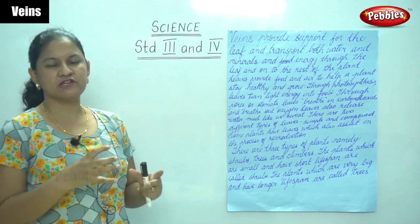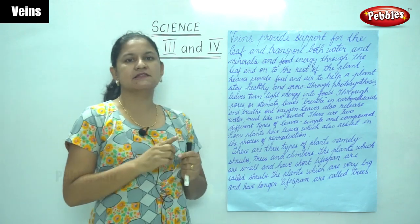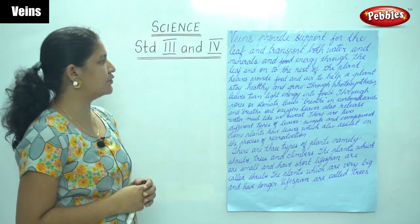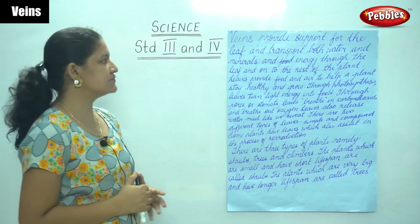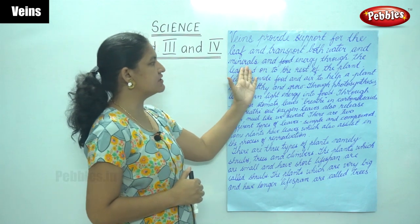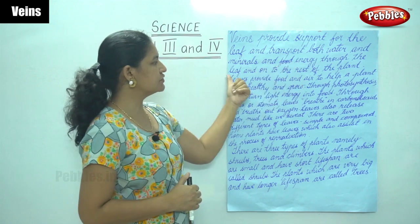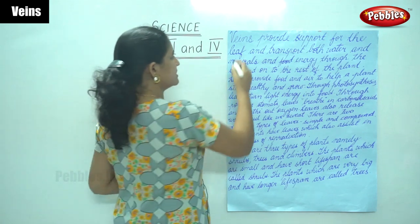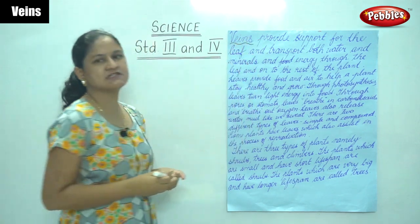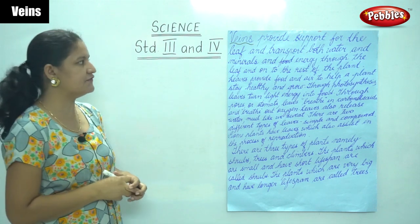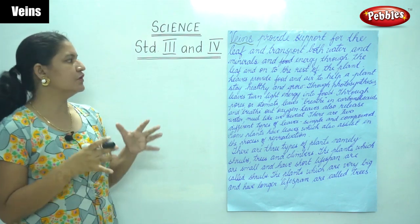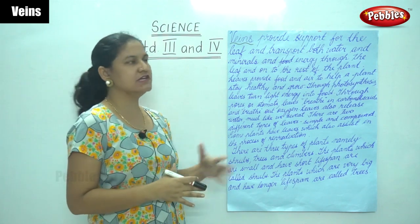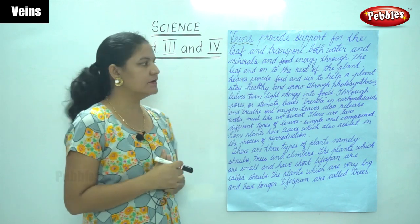Next we are going to talk about the veins that are present on a leaf. Veins provide support for the leaf and transport both water, minerals, and food energy through the leaf to the rest of the plant. So the main function of the veins is to provide support to the leaf and transport food, water, and minerals.